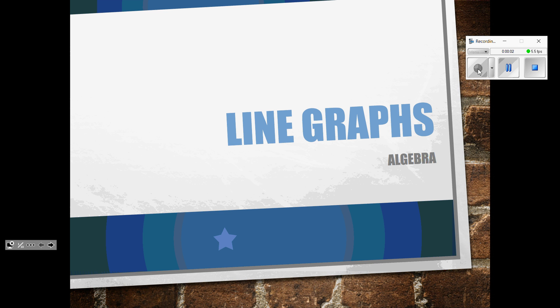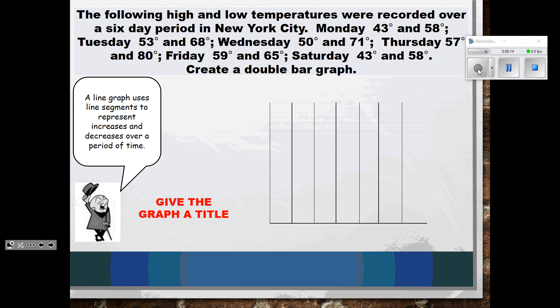In this lesson we're going to be looking at line graphs. We're going to look at some information and talk about how to graph it, and then we are going to look at interpreting the results on a line graph. So if you're taking notes, you will look at this right here. The following high and low temperatures were recorded over a six-day period in New York City.